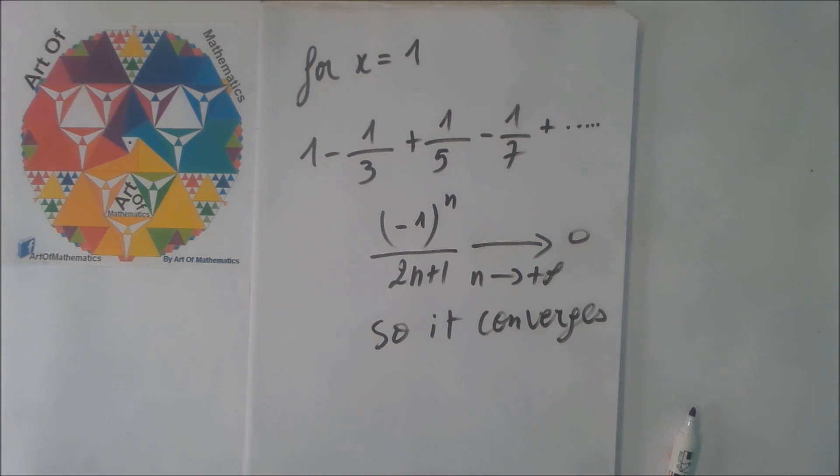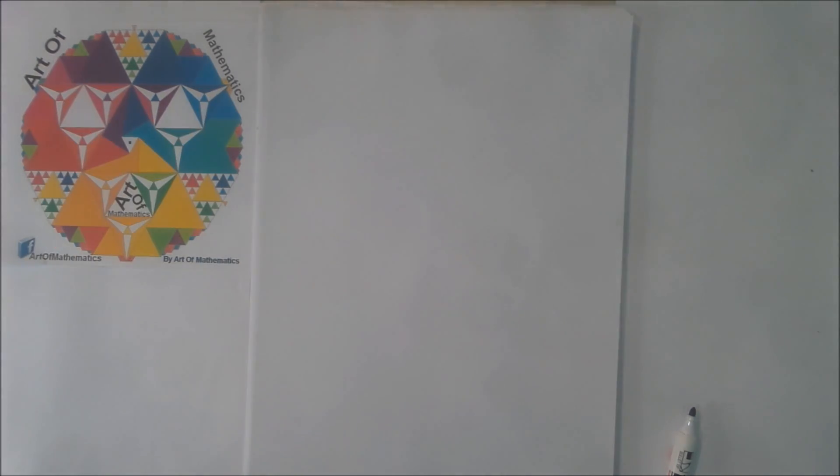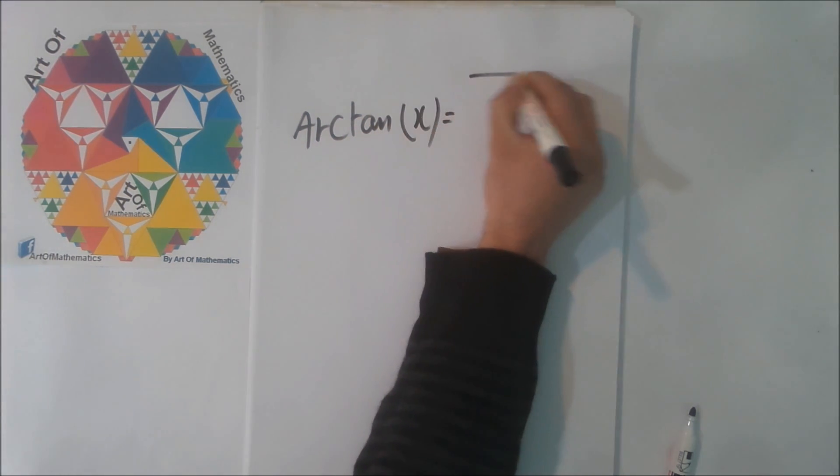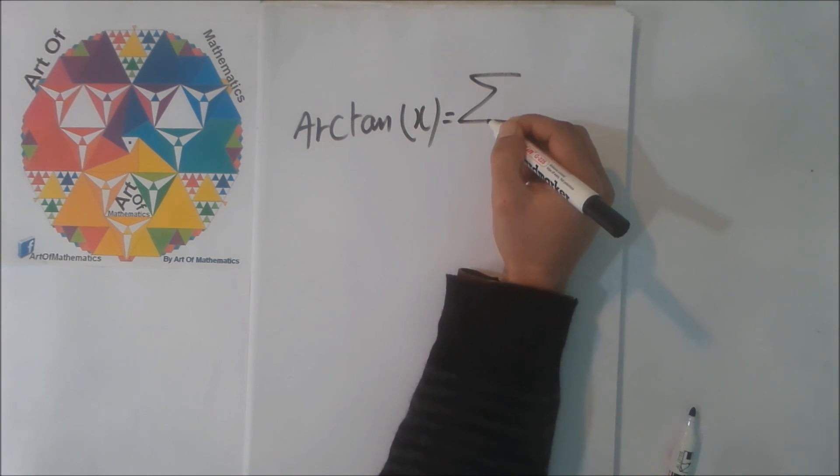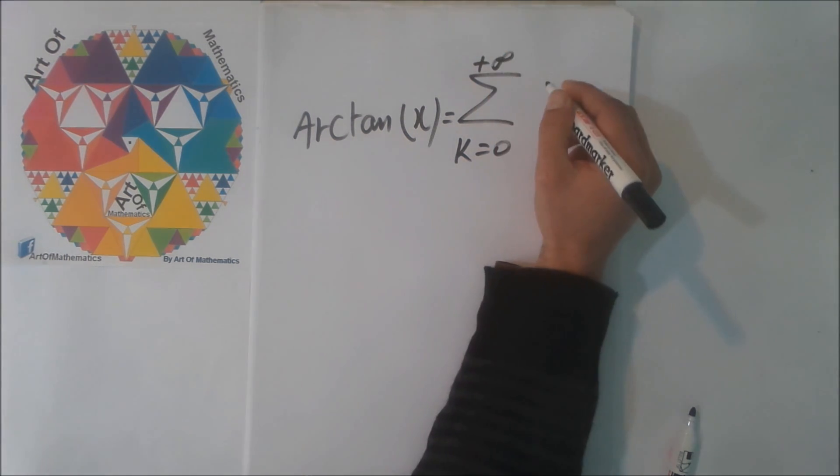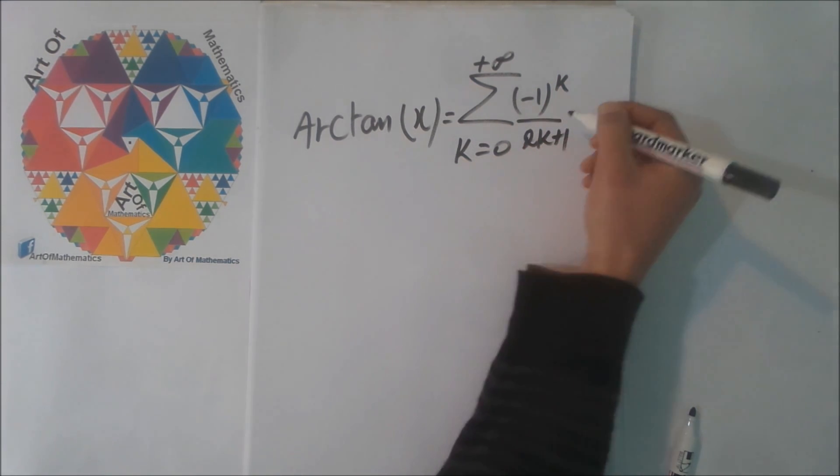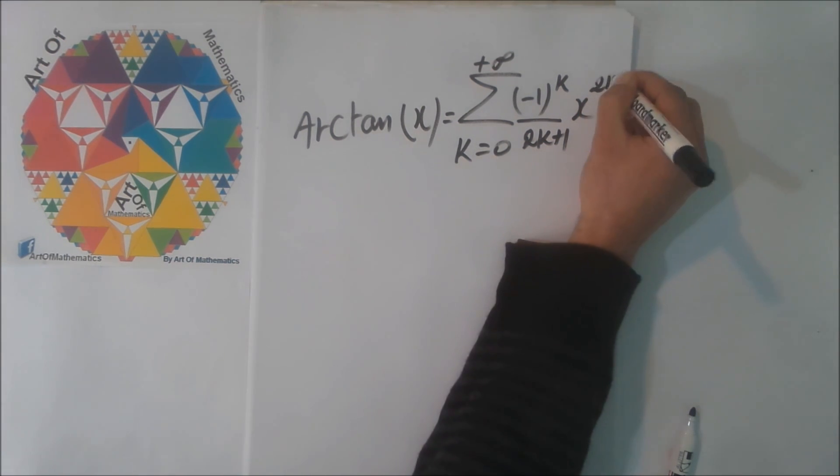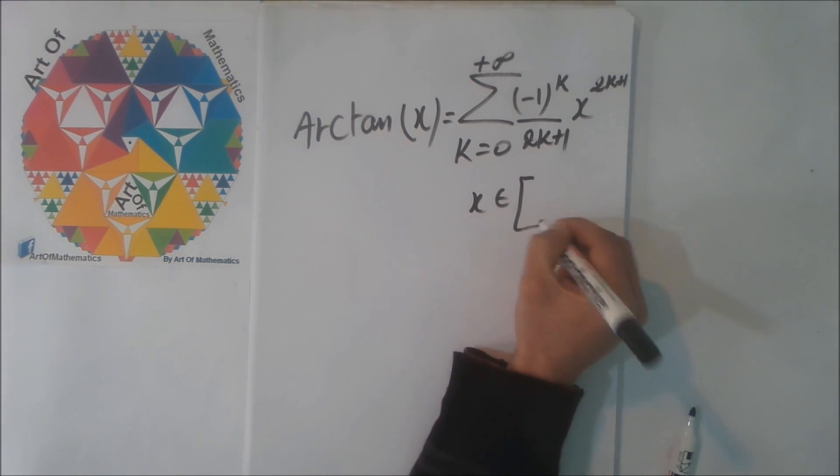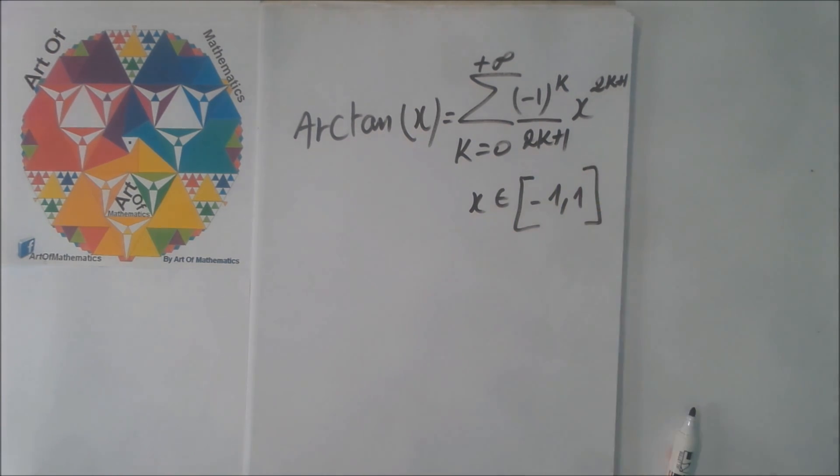Apply the same process to find out that it converged also for x equal to minus 1. Now we can write down that arctangent x is equal to the sum from k equals 0 to infinity of minus 1 to the power k plus 1, times x to the power 2k plus 1, divided by 2k plus 1, and this is good when x belongs to the closed interval minus 1 to 1.